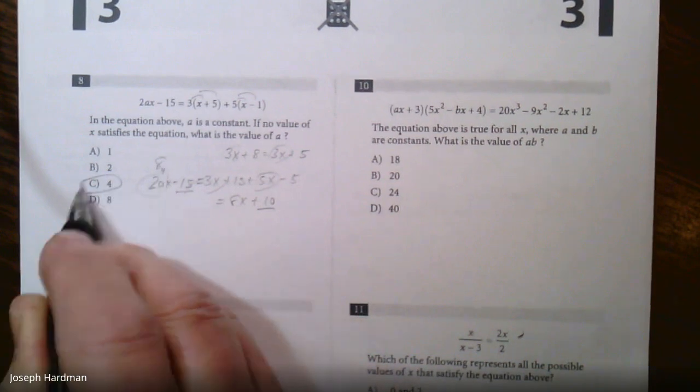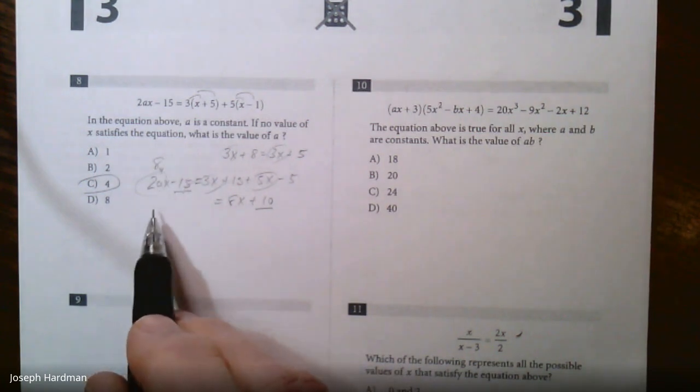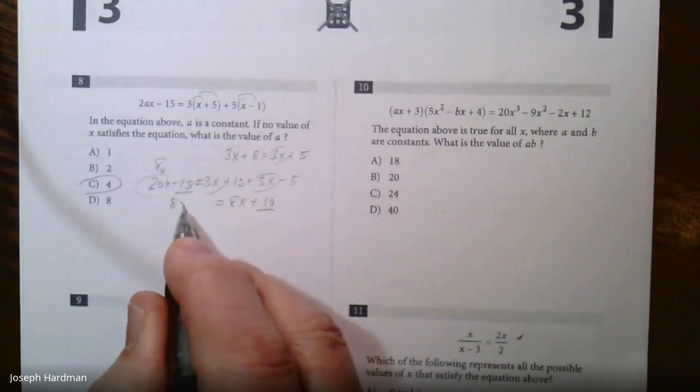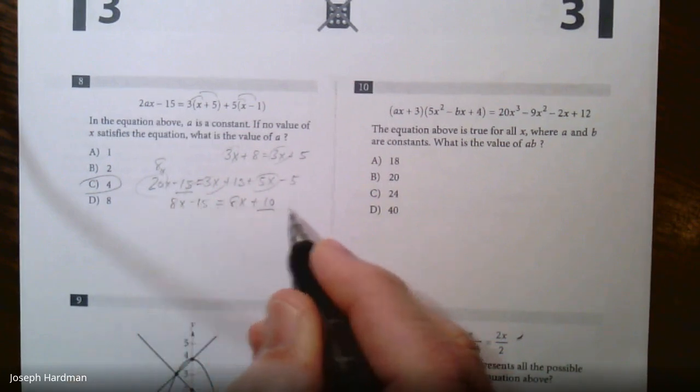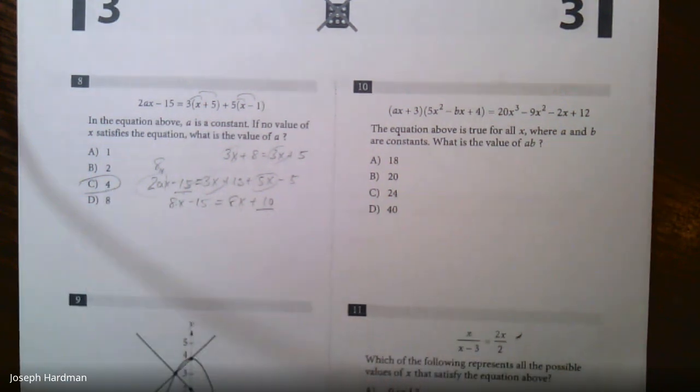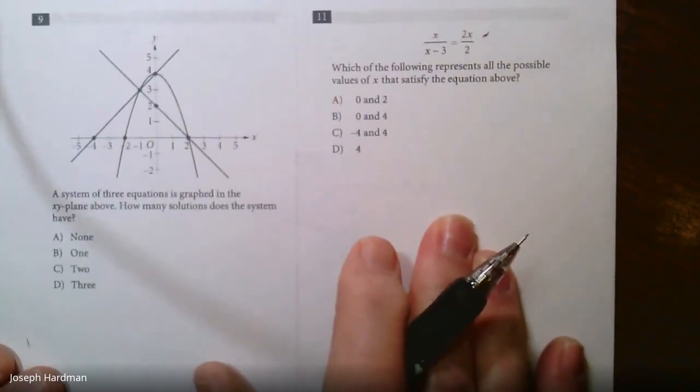So 2 times something is 8, so it's got to be 4. So the answer is C, 4. No solution means you have the same variables on both sides, 8x, 8x. So now if 4 is there, then we're going to have 8x minus 15 equals 8x plus 10. No solution. But remember now 2 times something is 8, so it's got to be 4.